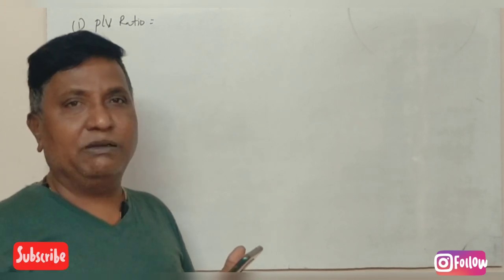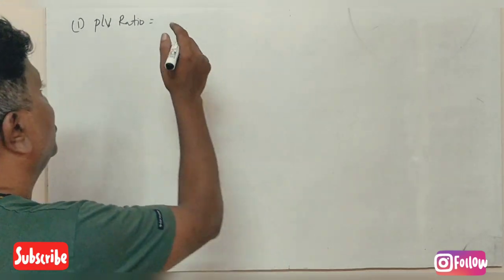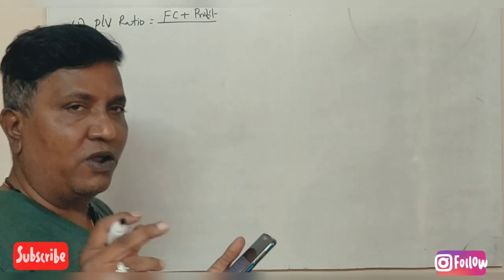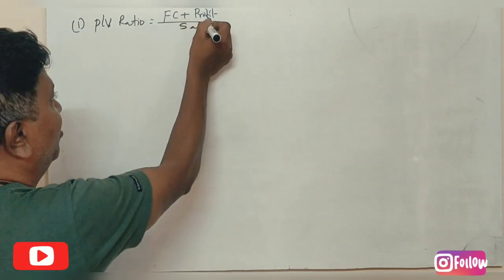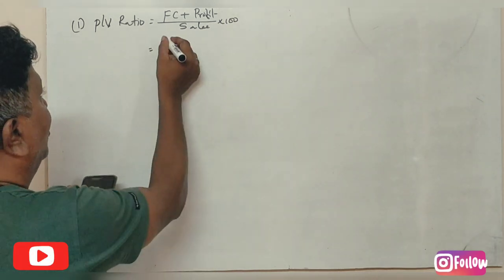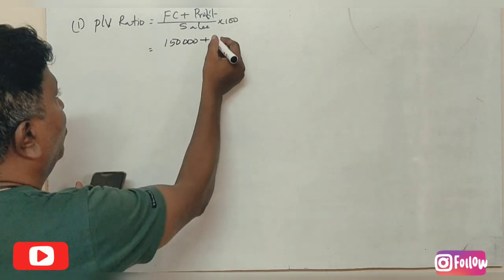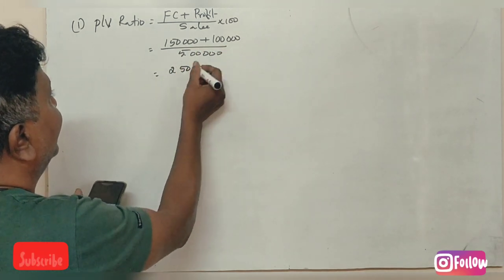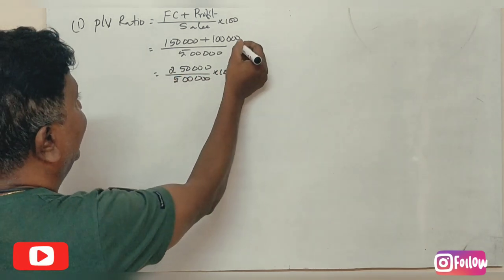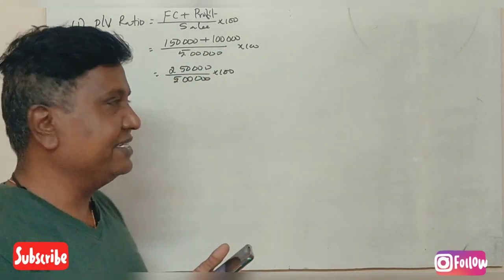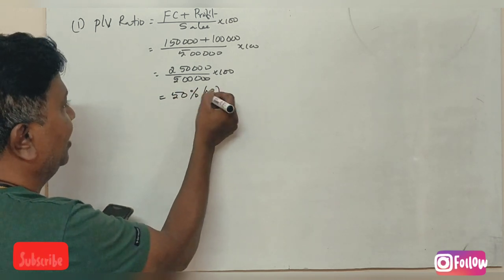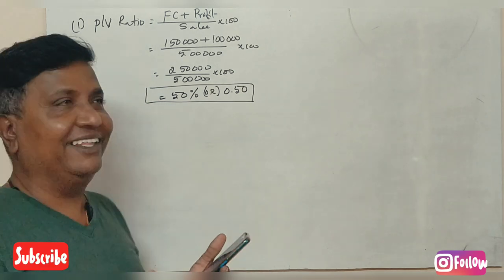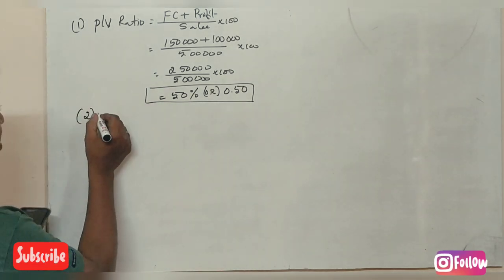PV ratio equals sales minus variable cost, divided by sales, into 100. Variable cost equals fixed cost plus profit, which is 1,50,000 plus 1,00,000 equals 2,50,000. So variable cost is 2,50,000 rupees, and sales is 5,00,000 rupees. Therefore PV ratio equals 2,50,000 divided by 5,00,000 into 100, which gives us 50%.